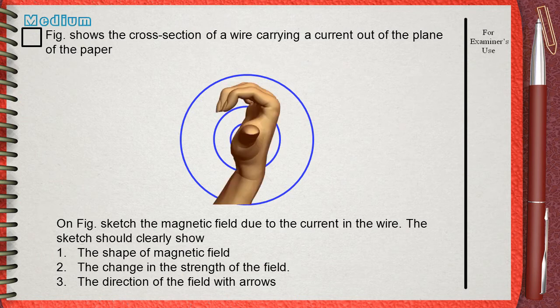So our hand will be positioned this way. The thumb will point out of the page as mentioned in the question. This is the direction of the current. This means that the direction of the magnetic field will be as shown by the rest of the fingers. So the circulation will be anti-clockwise.